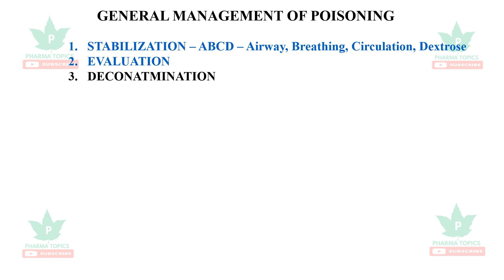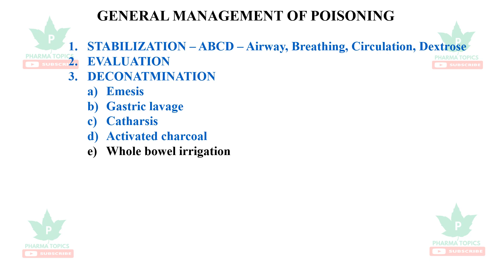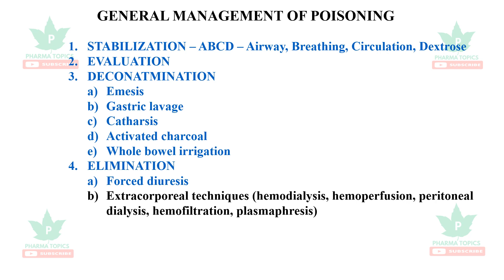Decontamination — Poison Remove. Methods include Emesis, Gastric Lavage, Catharsis, Activated Charcoal, and Whole Bowel Decontamination. Then Elimination: Forced Diuresis, Hemodialysis, Hemoperfusion, Peritoneal Dialysis, Hemofiltration, and Plasmapheresis. Then Antidote.